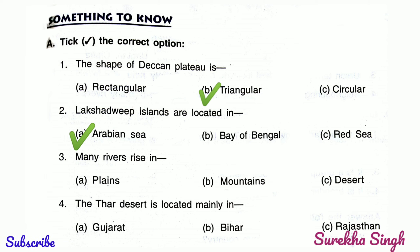Question 3: Many rivers rise in plains, mountains, or desert. Option B is correct here — many rivers rise in mountains.